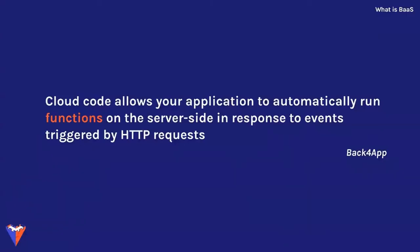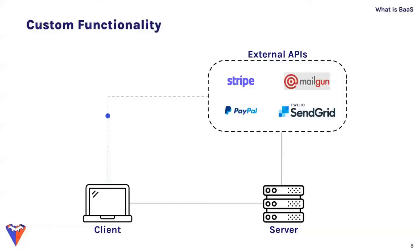One way BaaS providers try to address limited customizability is through a feature commonly known as cloud code. Cloud code allows your application to automatically run functions on the server side in response to events triggered by HTTP requests, letting users take advantage of BaaS benefits even if they need functionality not natively supported. One specific use case is integrating with third-party APIs — for example, if Fortress IO hard-codes a Stripe secret API key in their front-end code, anyone who inspects that code can access the key.